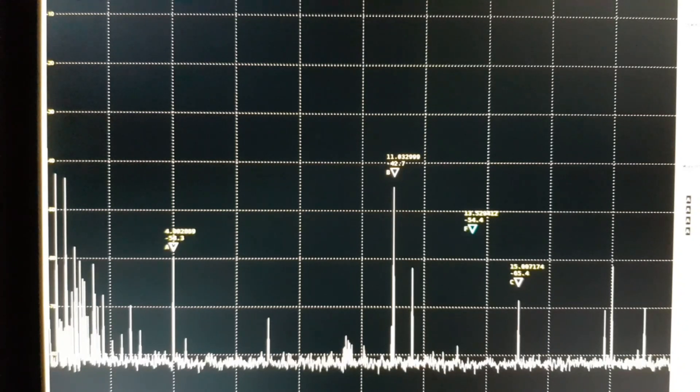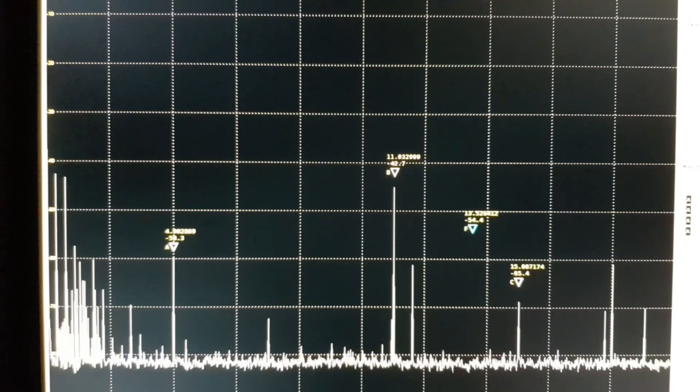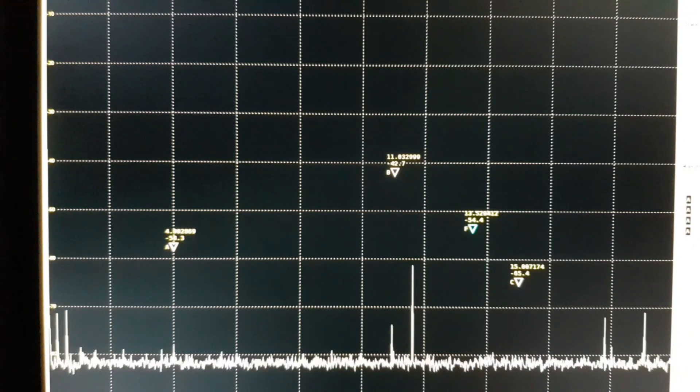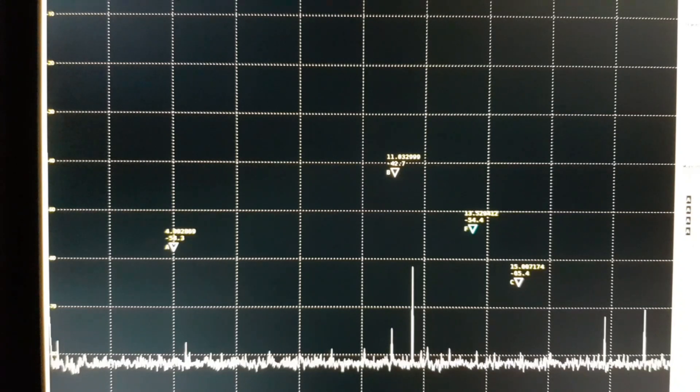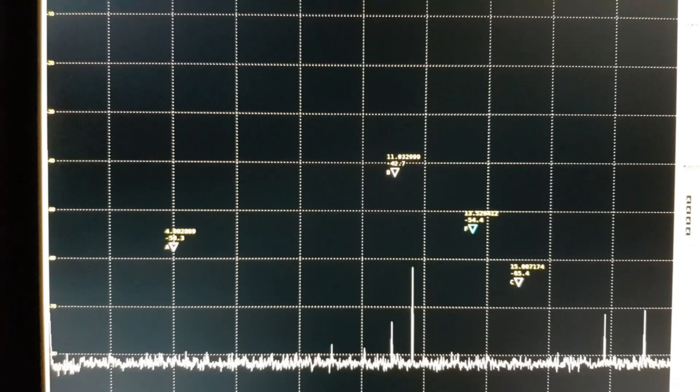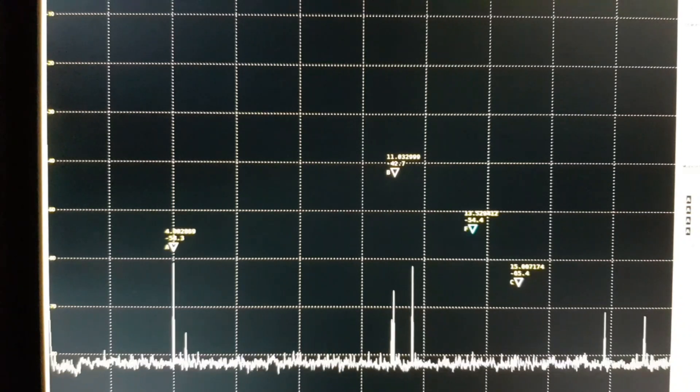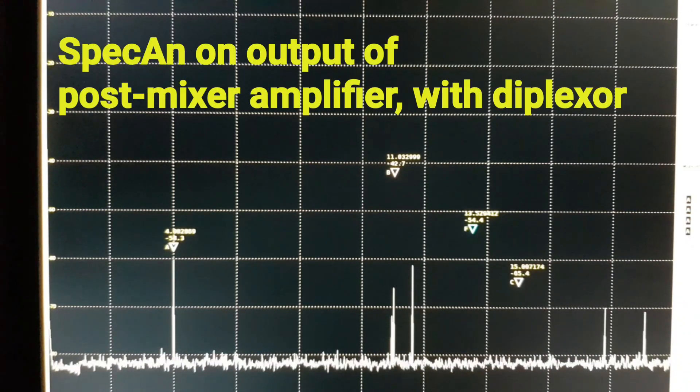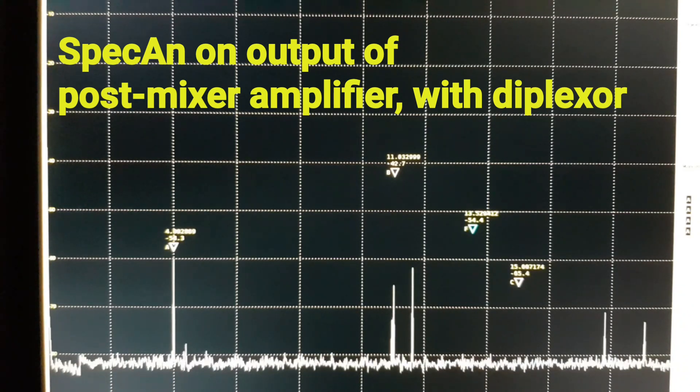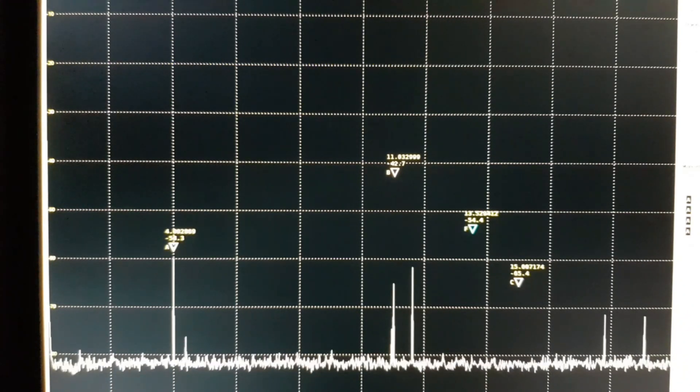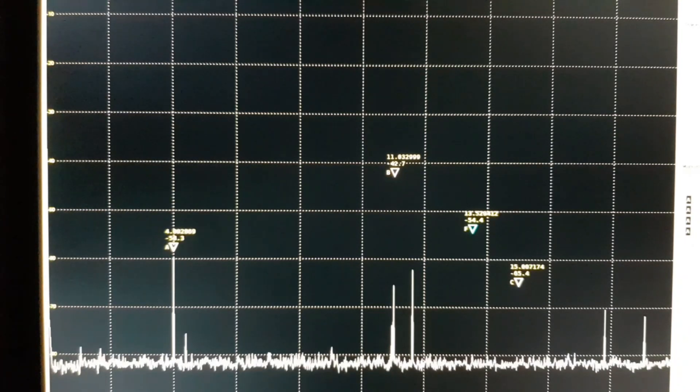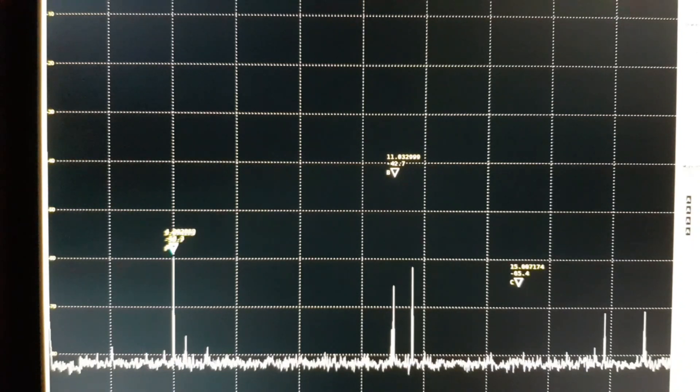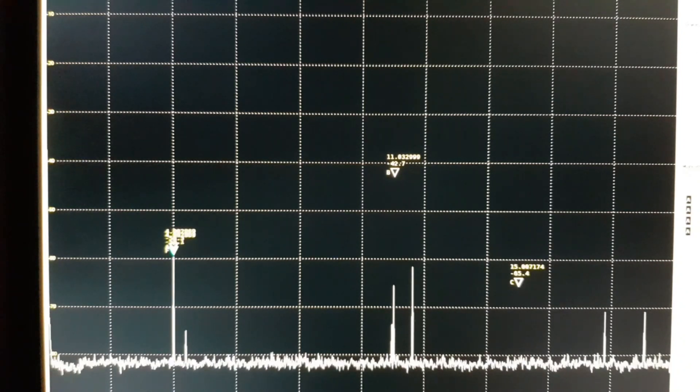So let's now cut our diplexer in. So I'm now connecting the diplexer into circuit at the output of the post mixer amplifier. And now we're looking at the output of the post mixer amplifier with the diplexer in circuit, and doesn't that look better. So now the largest thing we've got is the signal coming down the IF—that's the wanted signal.